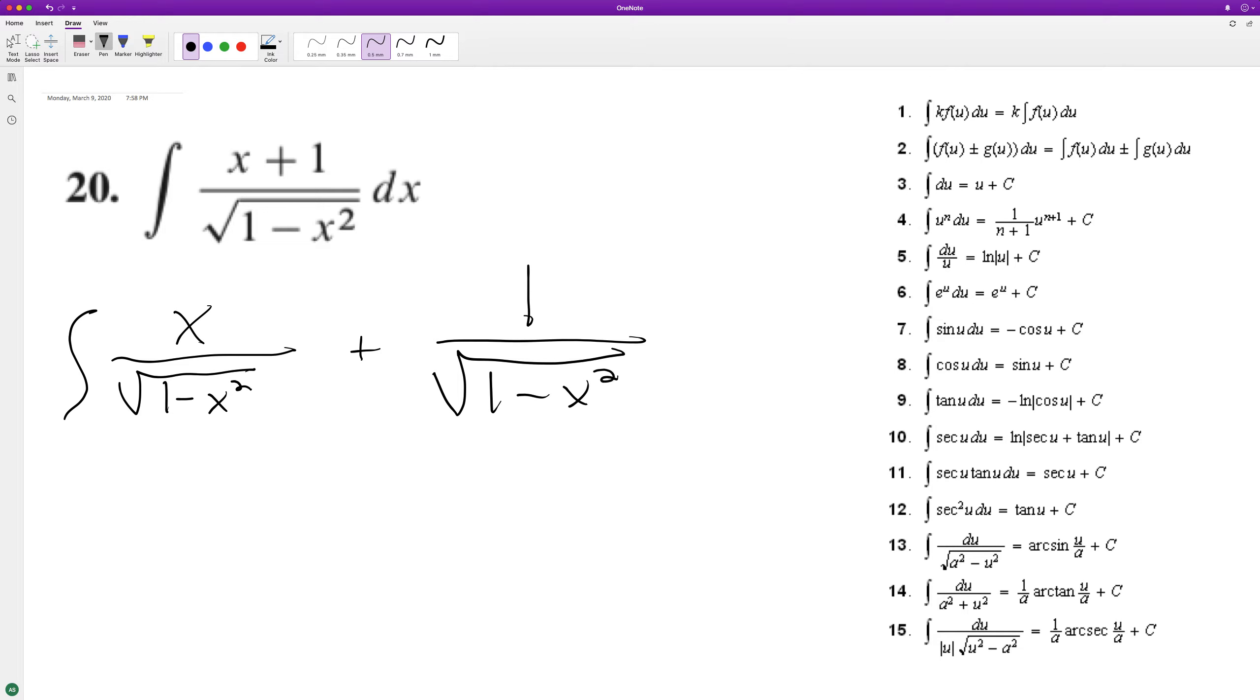Okay, so what we'll do is we'll let u equal 1 minus x squared, and then du is equal to negative 2x dx.